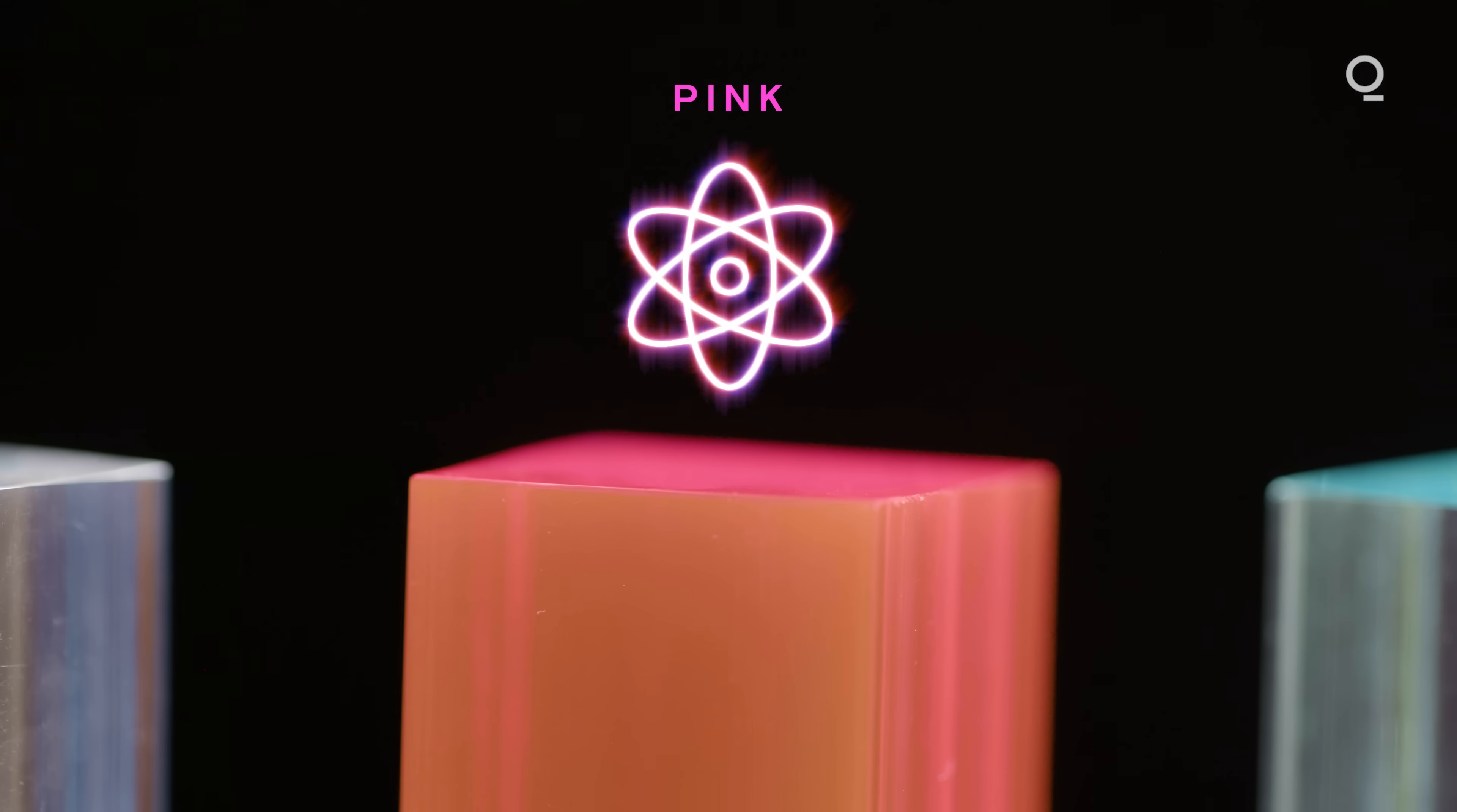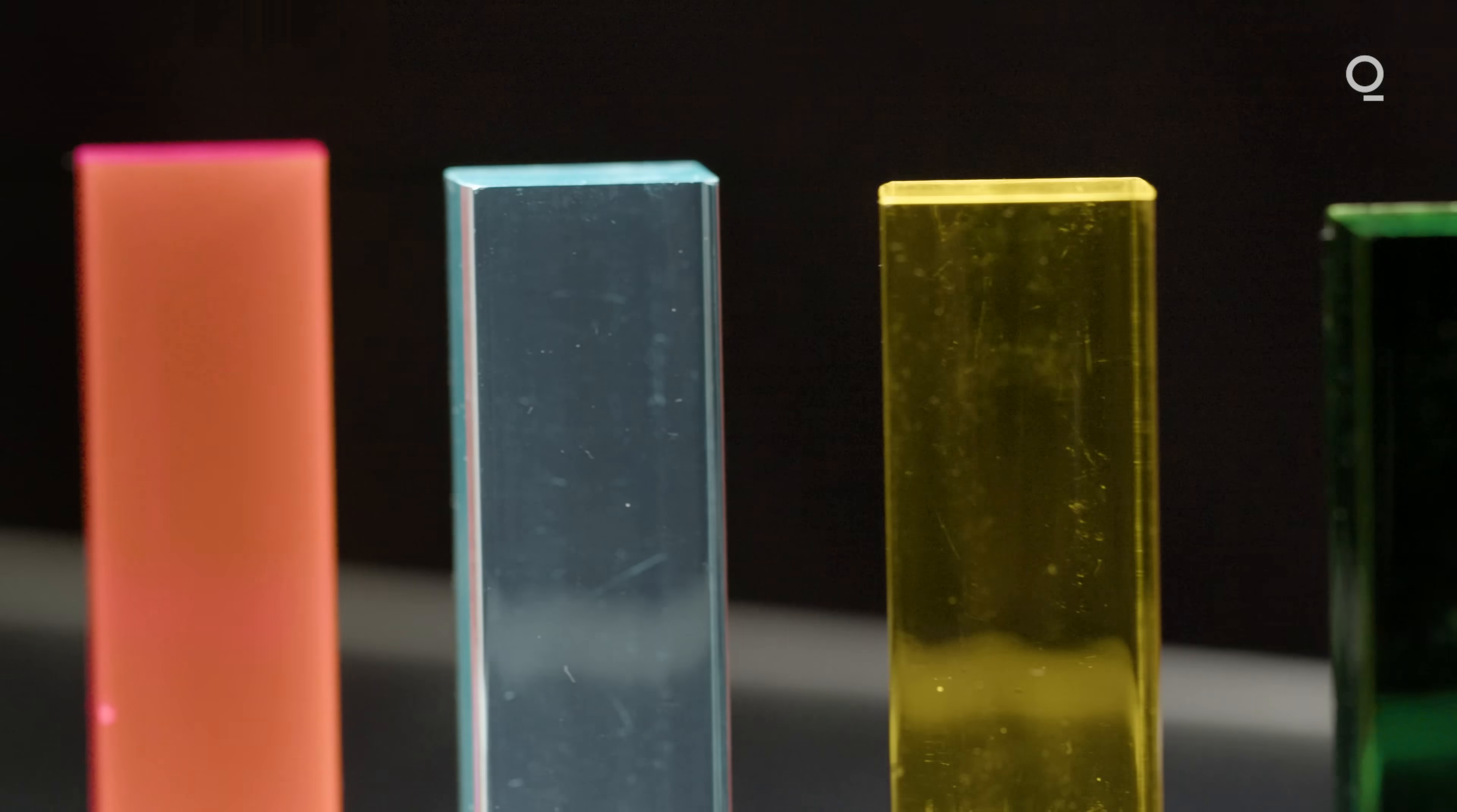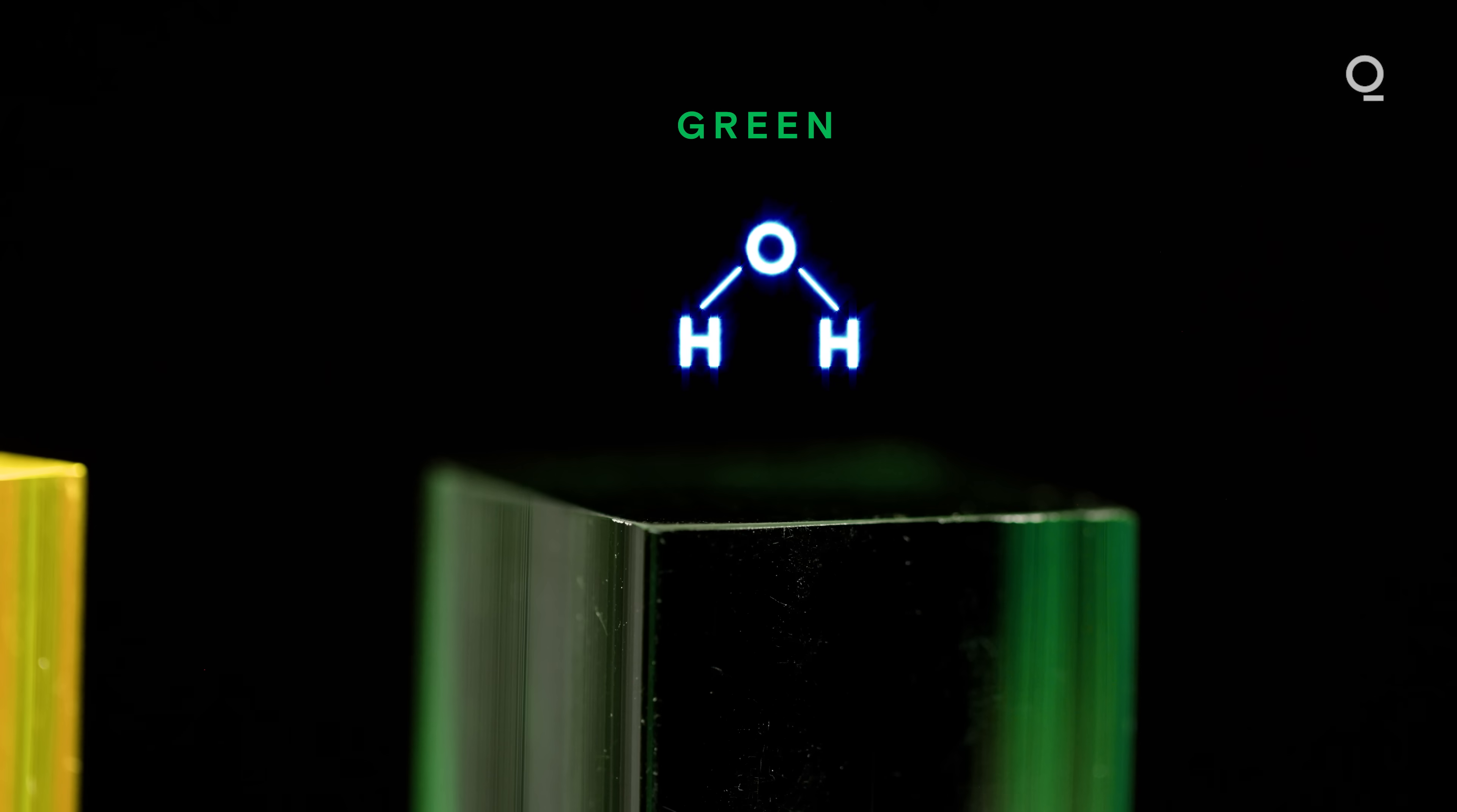There's also pink hydrogen, where you use nuclear power to create hydrogen. One color is prized above them all: green. Green hydrogen is the hydrogen that everybody wants because it uses renewable electricity to split water into hydrogen and oxygen.